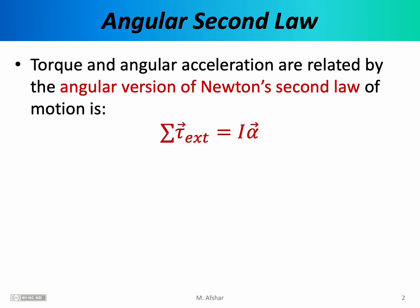It turns out torque and angular acceleration are related by the angular version of Newton's second law of motion. According to this formula, the net external torque acting on a system is equal to the moment of inertia of the system times the angular acceleration of the system. So if you want to know how a system will accelerate, you need to know the inertia of the system, calculate the torques acting on it, add those to find the net torque, and then the angular acceleration will be the net torque divided by the moment of inertia.